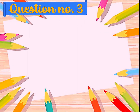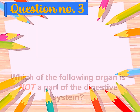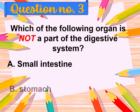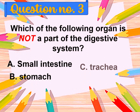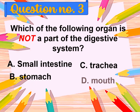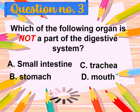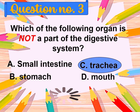Question number three: Which of the following organs is not a part of the digestive system? A. Small intestine, B. Stomach, C. Trachea, D. Mouth. The correct answer is trachea.